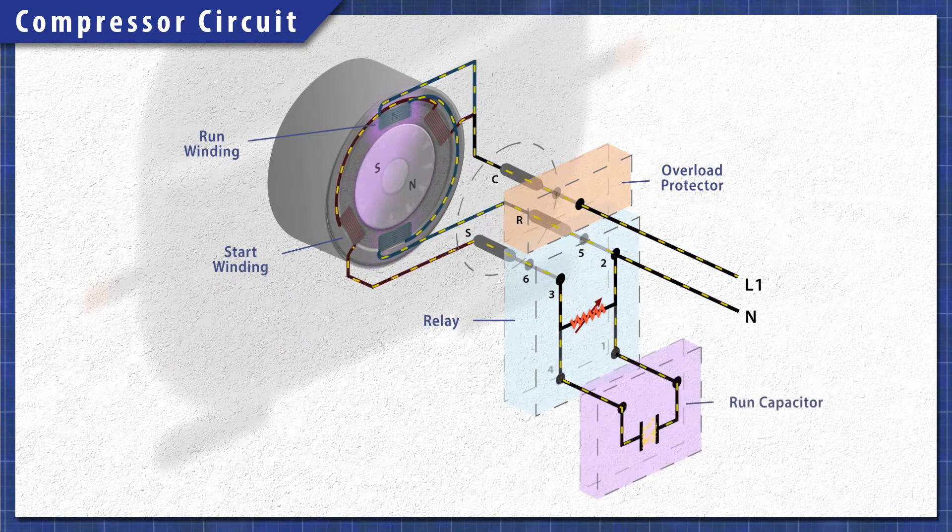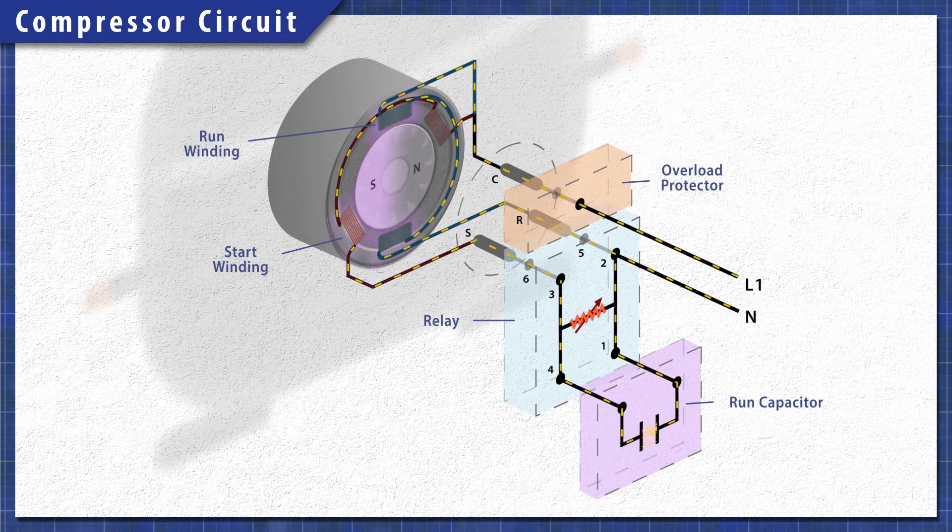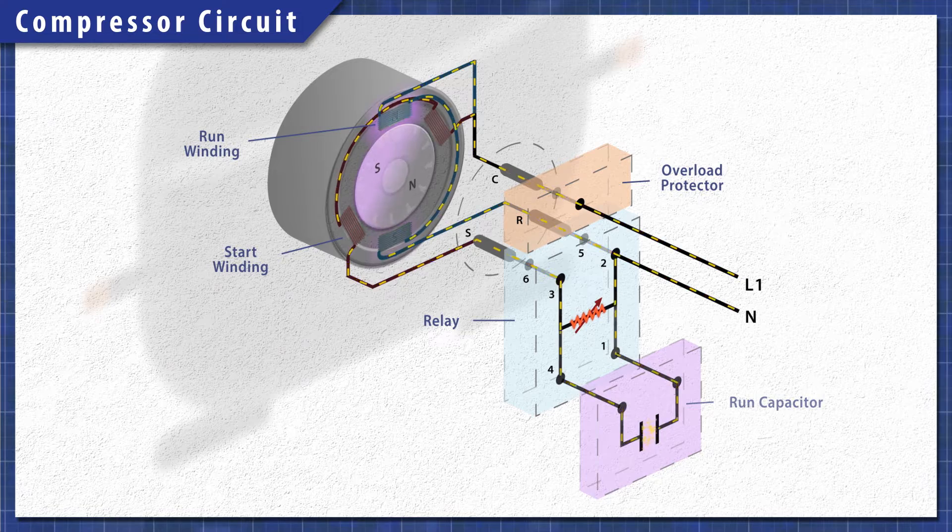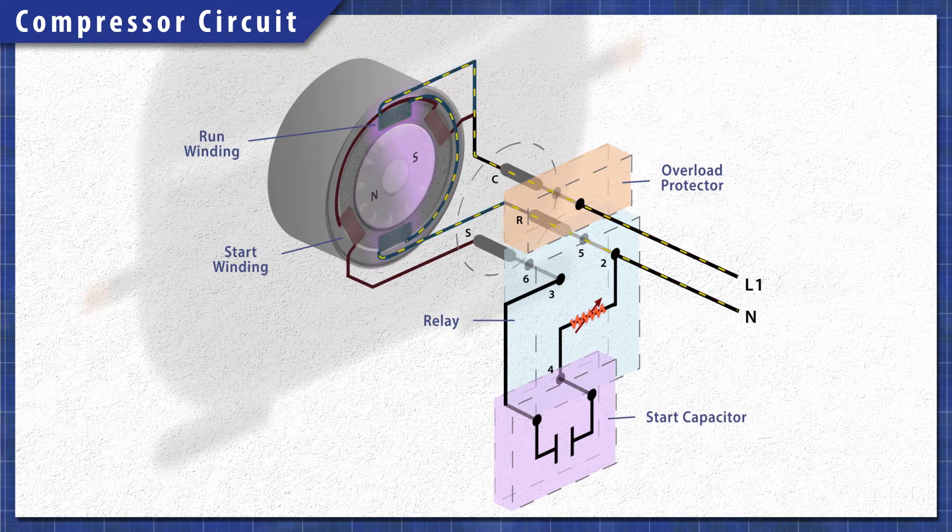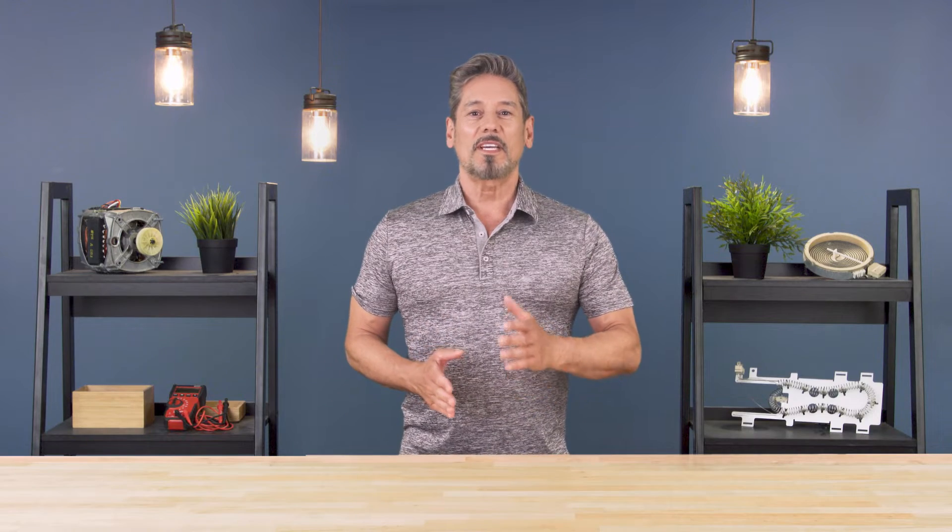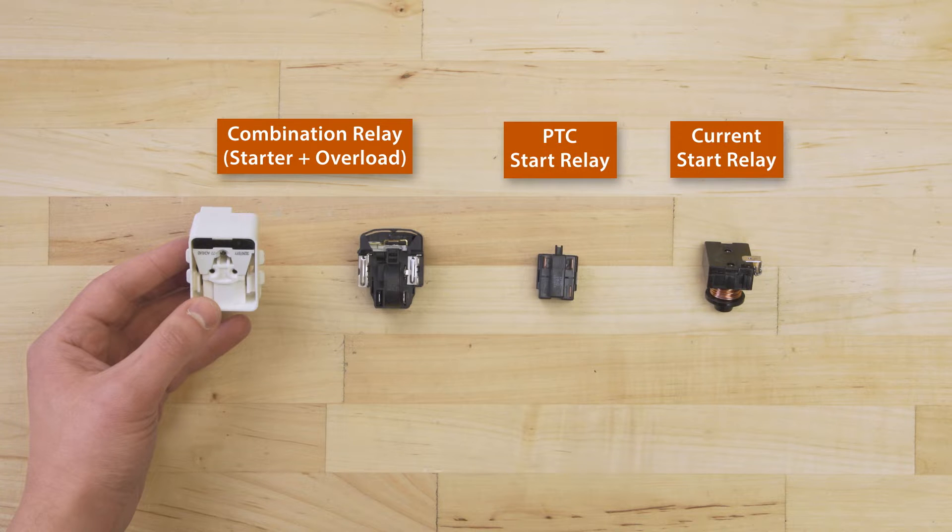Other models also use a run capacitor to help increase the efficiency. This run capacitor allows the start winding to stay energized as the motor runs. Older fridges might use a start capacitor which is taken out of the circuit by the relay shortly after startup. Keep in mind that these are the most common components but there are other setups as well. This includes current sensing relays or combination relays and kits.